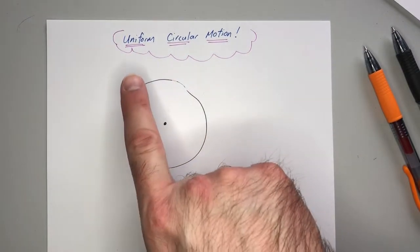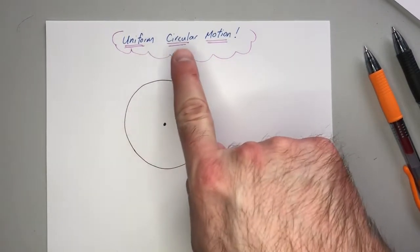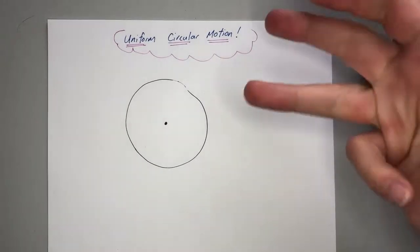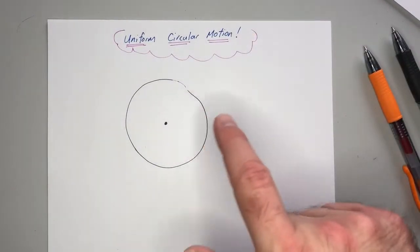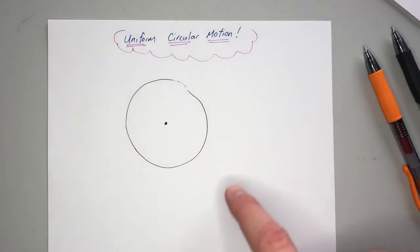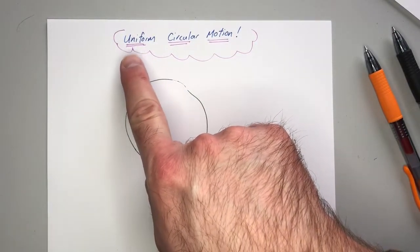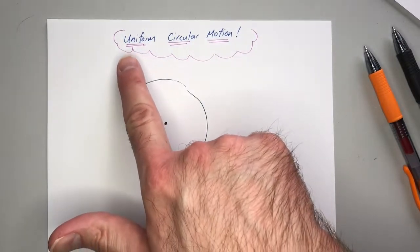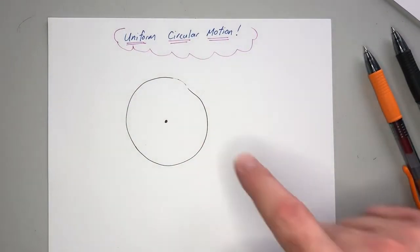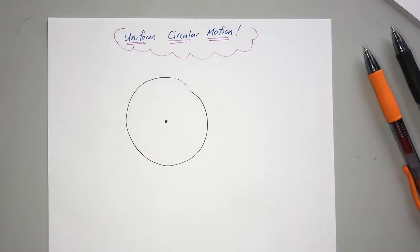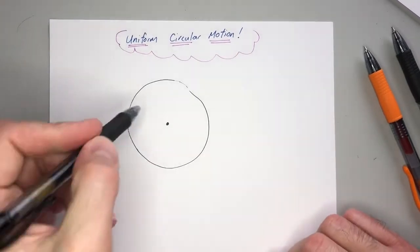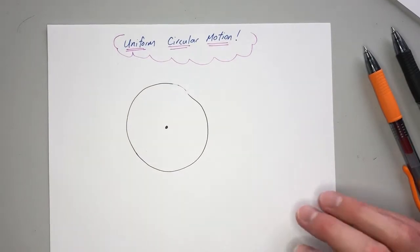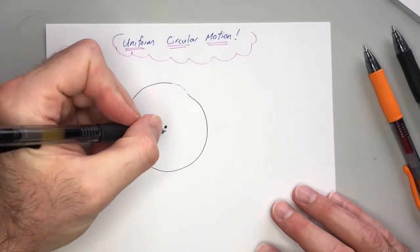Today we're going to start something brand new: uniform circular motion. We talked about kinematics, forces, energy, and momentum, and now we're going to dive into the land of moving in circles. I was going to call this unit 'going in circles' but I thought that might feel defeated, so we're just going to keep it uniform circular motion.